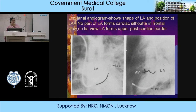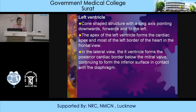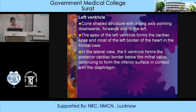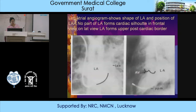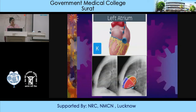The left ventricle is a cone-shaped structure with a long axis pointing downwards, forwards, and to the left. The apex of the left ventricle forms the cardiac apex. Most of the left border in the frontal view is formed by the left ventricle. On the lateral view, the left ventricle forms the posterior cardiac border below the mitral valve, continuing to form the inferior surface in contact with the diaphragm.